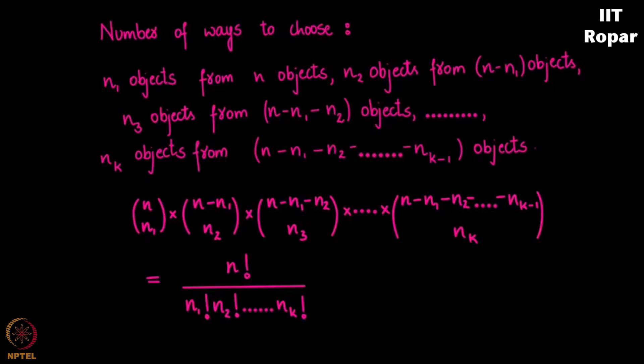This can be denoted as n choose (n1, n2, n3, ..., n_k). What we are doing is choosing a particular number of objects from a given fixed number n, and we keep choosing n1, n2, ..., n_k from this set of n.